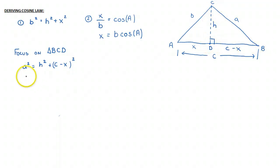So now that I have this, what I'm going to do is I'm going to take a second and I'm going to expand the binomial there. So H squared plus C minus X times C minus X. Which is, so therefore, A squared is equal to H squared plus C squared minus 2CX plus X squared.